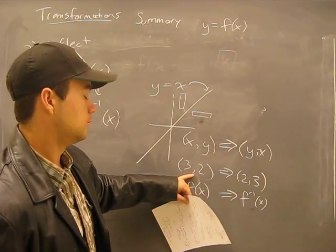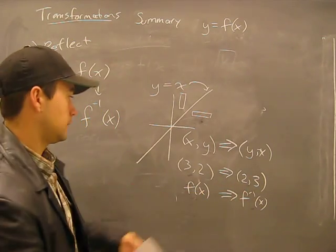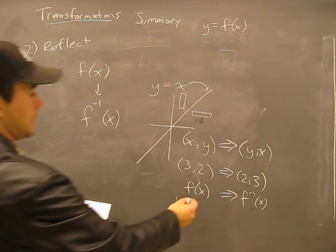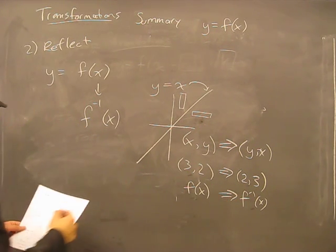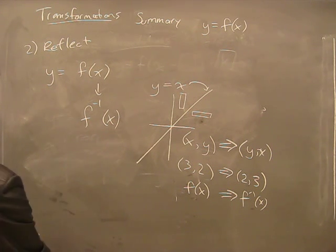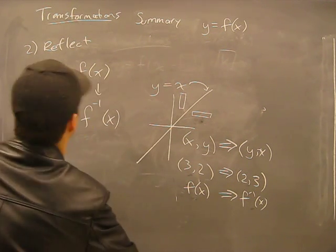So from regular function to the inverse function, any given point x y will be reversed. That's the idea with this one here. Next I'll do the summary on the vertical compression. I'll do it right now.